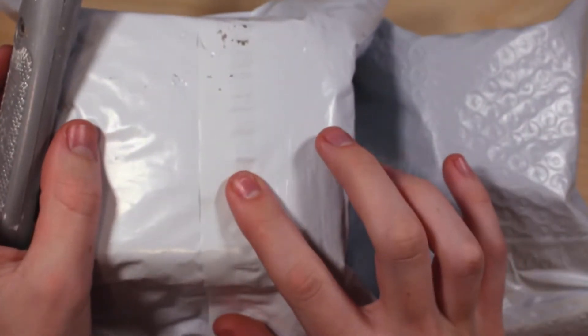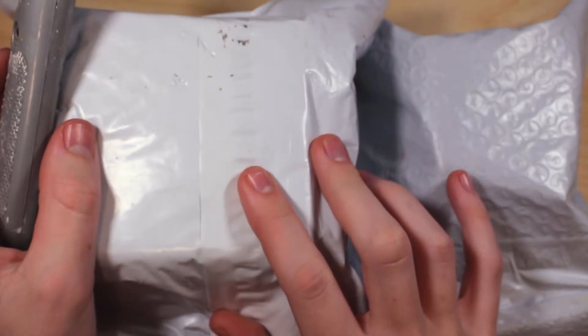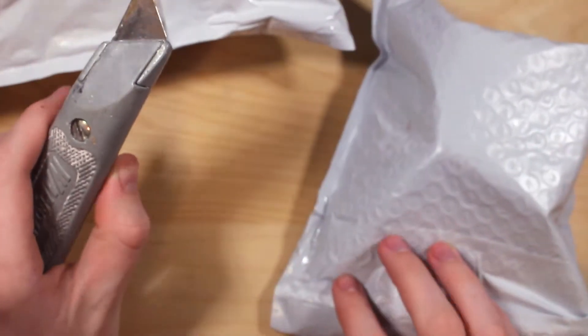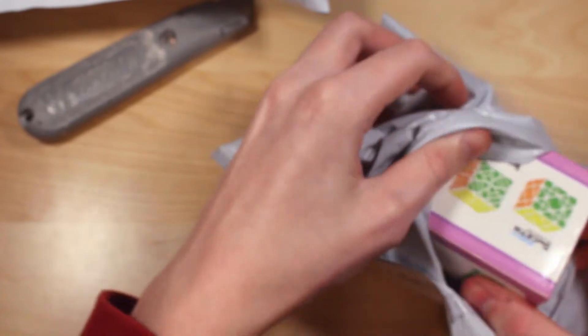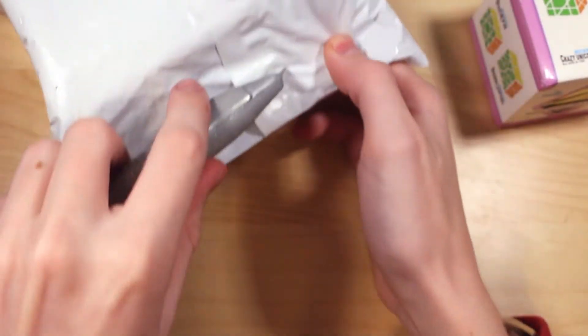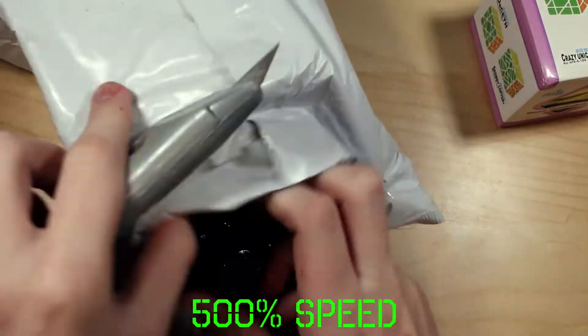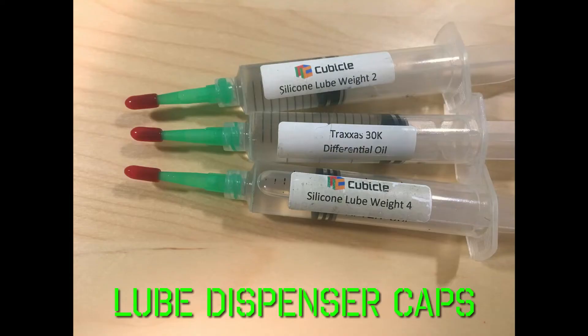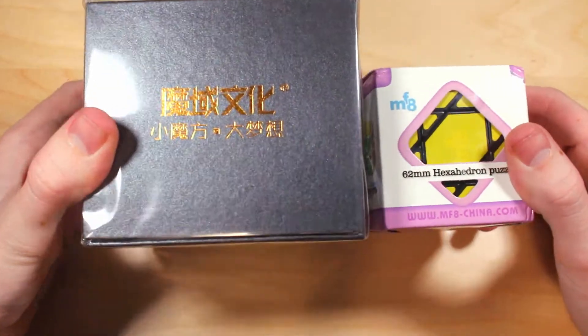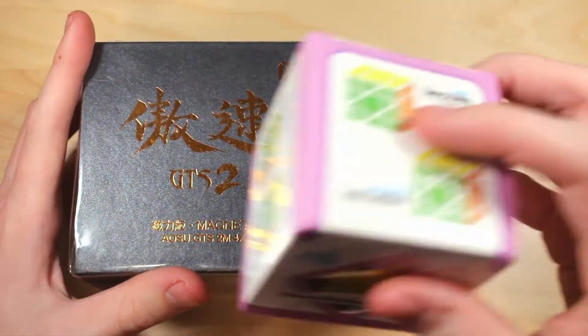Let's get into these puzzles. The puzzles in here, there's the Aosu GTS-2M and MF-8 Unicorn cube. So, let's open these up. Two puzzles here. I'm gonna open this one first.